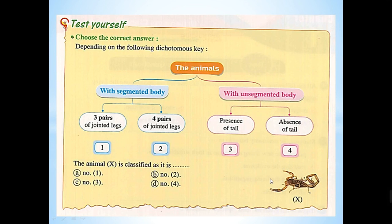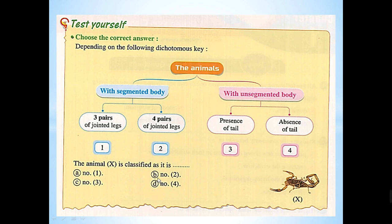Test yourself: we have an unknown animal X. We ask: does it have a segmented or unsegmented body? Segmented body means the body contains more than one part, such as head and thorax, head and abdomen, and so on. This animal has a head and other parts and a tail, so it has a segmented body. Does it have three pairs of jointed legs or four pairs? It has four pairs of jointed legs, so this animal belongs to group number two — the answer is letter B.